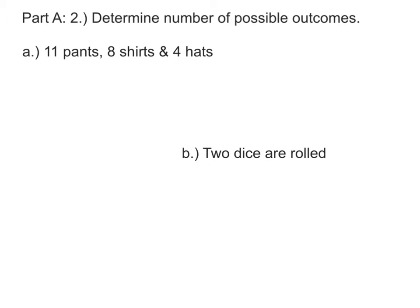When you have to determine the number of possible outcomes, you're going to use either permutations, combinations, or the basic counting principle.